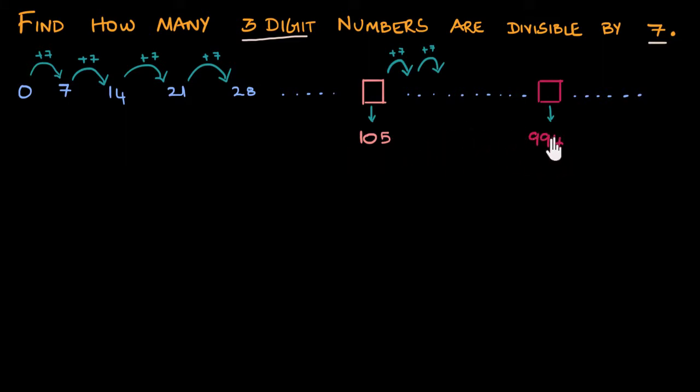Now I'm going to get these two. All I have to do is find this space between them. There is a space between them that I can find just by subtracting these two numbers. So 994 minus 105. 994 minus 100 is 894. 894 minus 5 is 889.